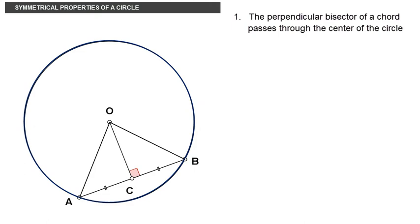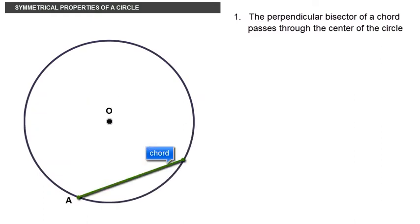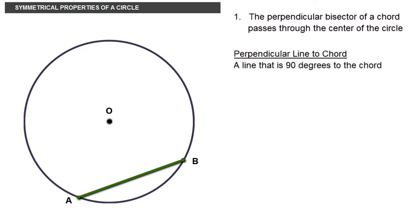The first property states that the perpendicular bisector of a chord passes through the center of the circle. A chord is drawn from point A to point B on the circumference. To visualize the statement, we first need to understand a few terms. The word perpendicular, in this case to the chord, implies the line that is 90 degrees to the chord.